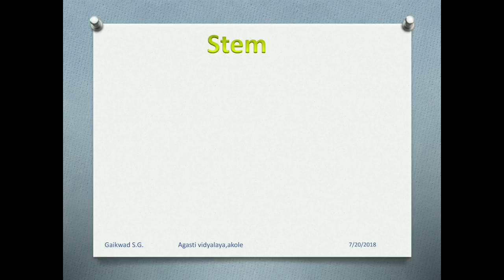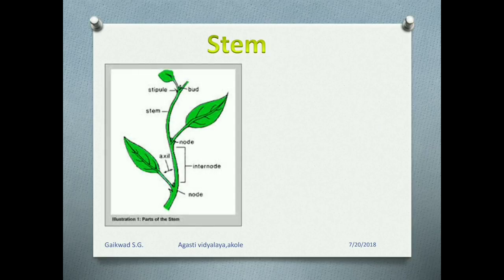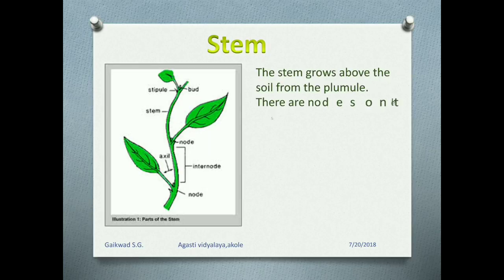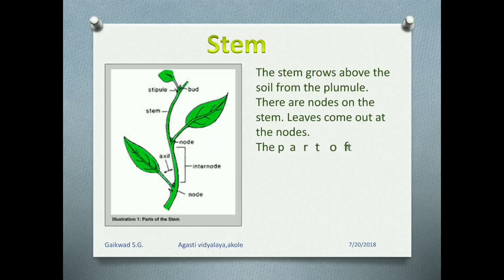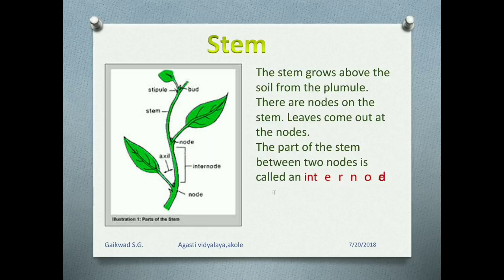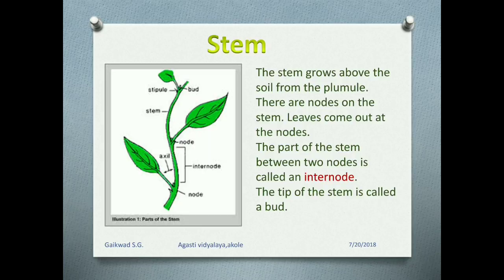The next part is stem. The stem grows above the soil from the plumule. There are nodes on the stem. Leaves come out at the node. The part of the stem between two nodes is called an internode. The tip of the stem is called a bud. Look at the diagram — we can see there node, internode, stem, and stipule or bud.